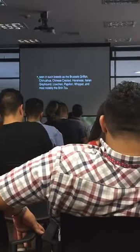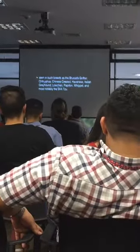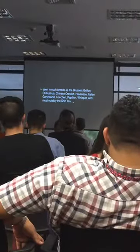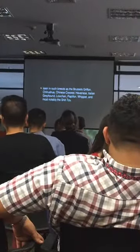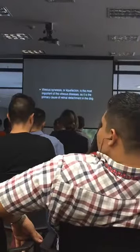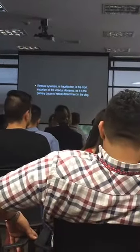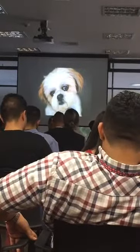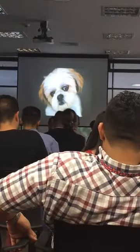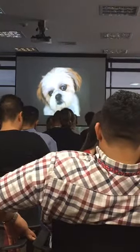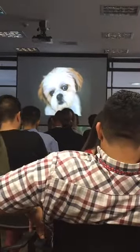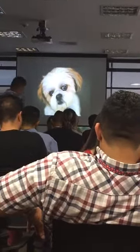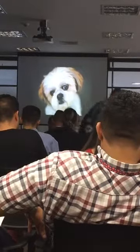The Chihuahua gets vitreous syneresis, Chinese Crested, Havanese, the Löwchen, Papillon — but the big one is the Shih Tzu. This is our poster child retinal detachment dog. This is what I get sent to me quite often. Both retinas will be detached, and it is usually due to a primary or inherited vitreous degeneration.